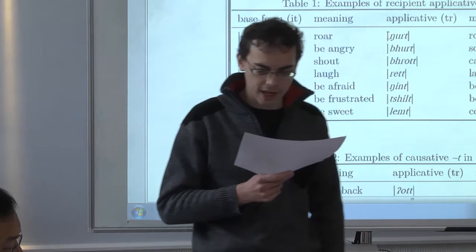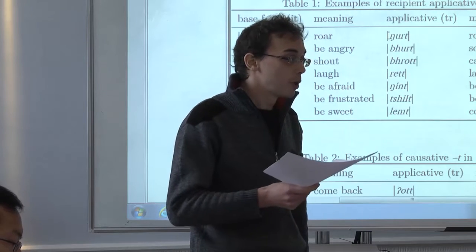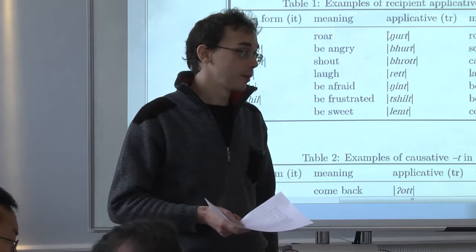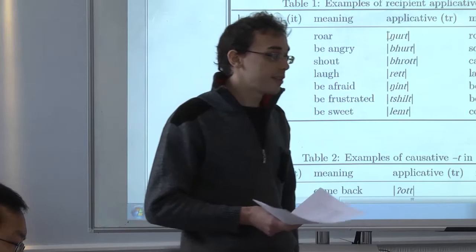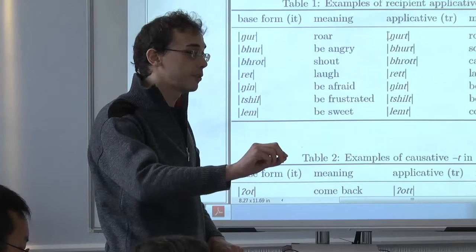And you have a few examples like to like from to be good, which are not really causative. They are more like what I have called using the Arabic tradition tropative. So, to consider something to be good. And there is evidence, for instance, in German language that the causative can also be used in some cases with a tropative meaning.